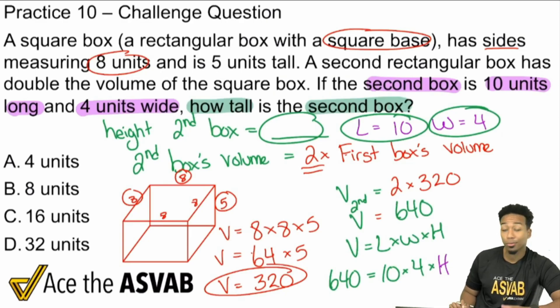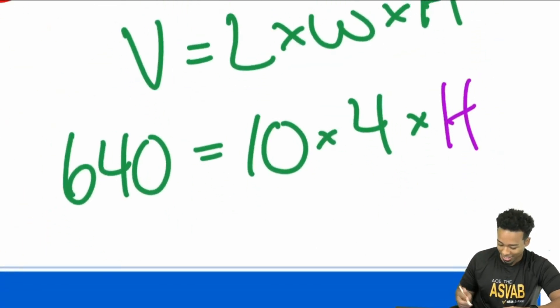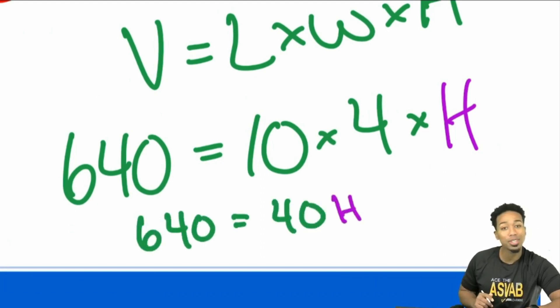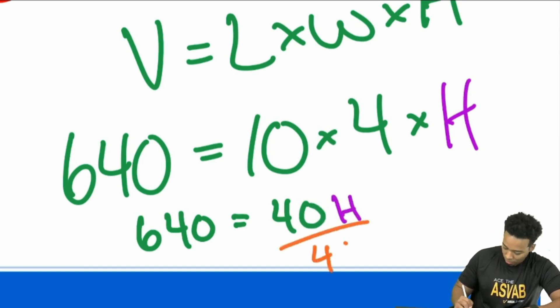So all we have to do at this point, all we have to do is go ahead, simplify here, divide both sides, we're set. So allow me to give myself a little more room. And so here, 10 times 4, that's going to give us 40. So now we have 40H, and the last thing we need to do is divide both sides by that 40. So divide both sides by 40. So we see here that that's going to cancel out completely.